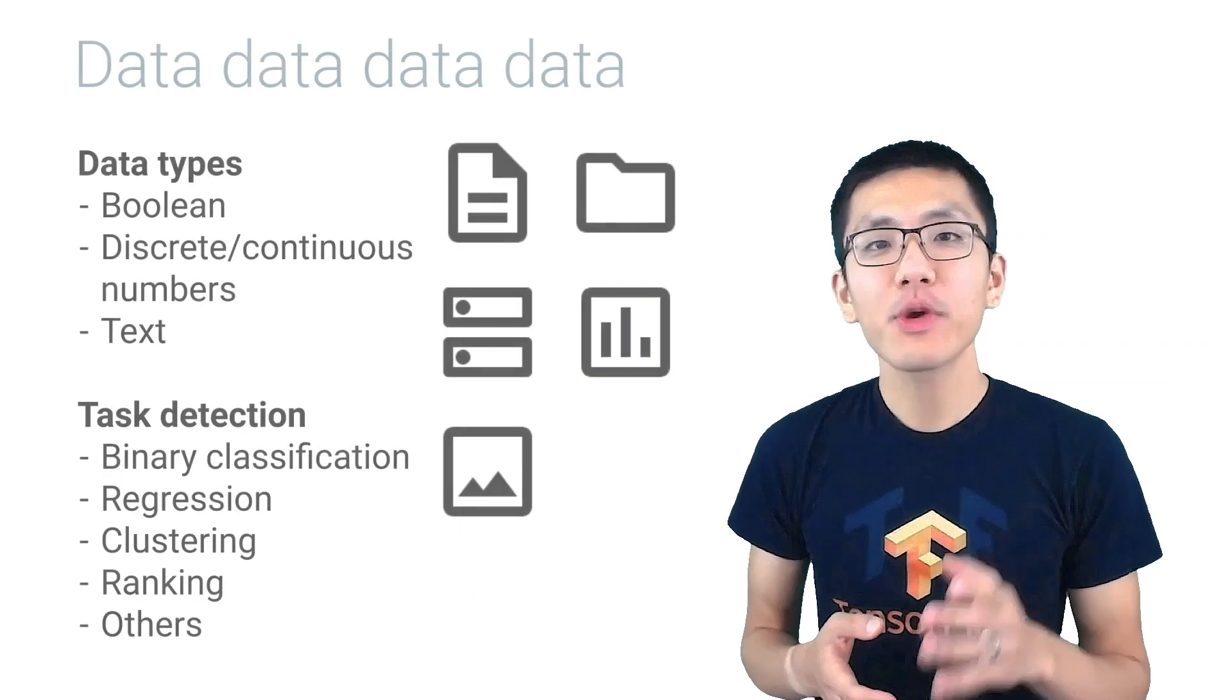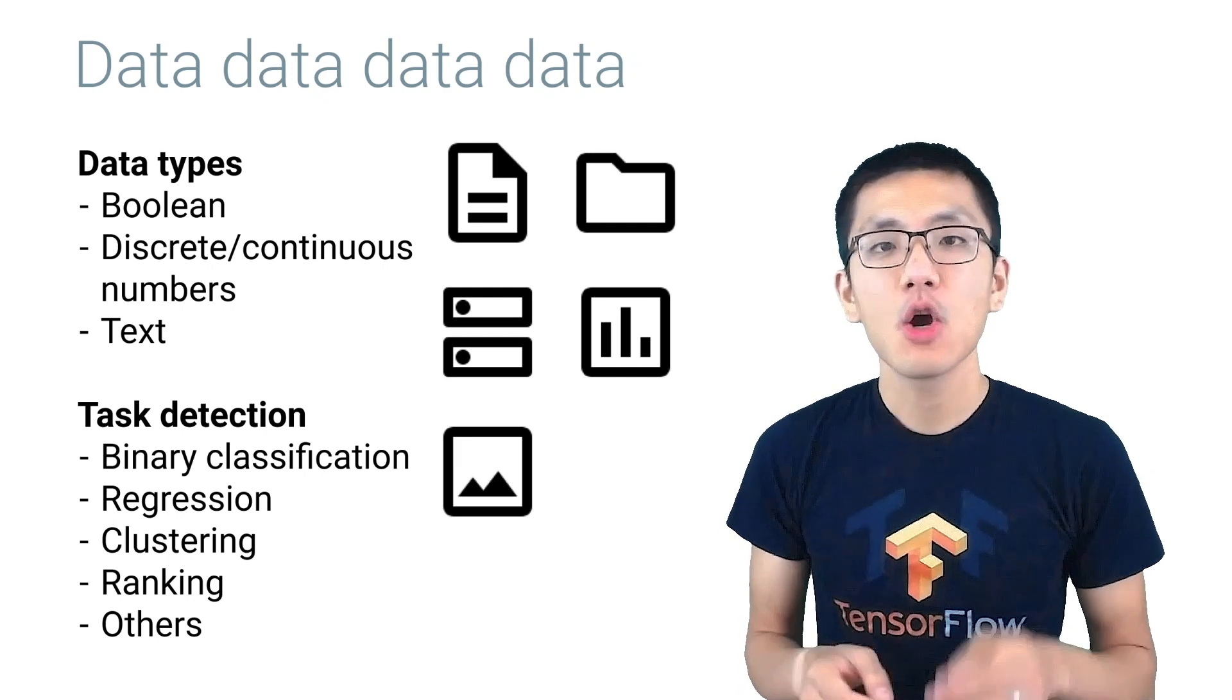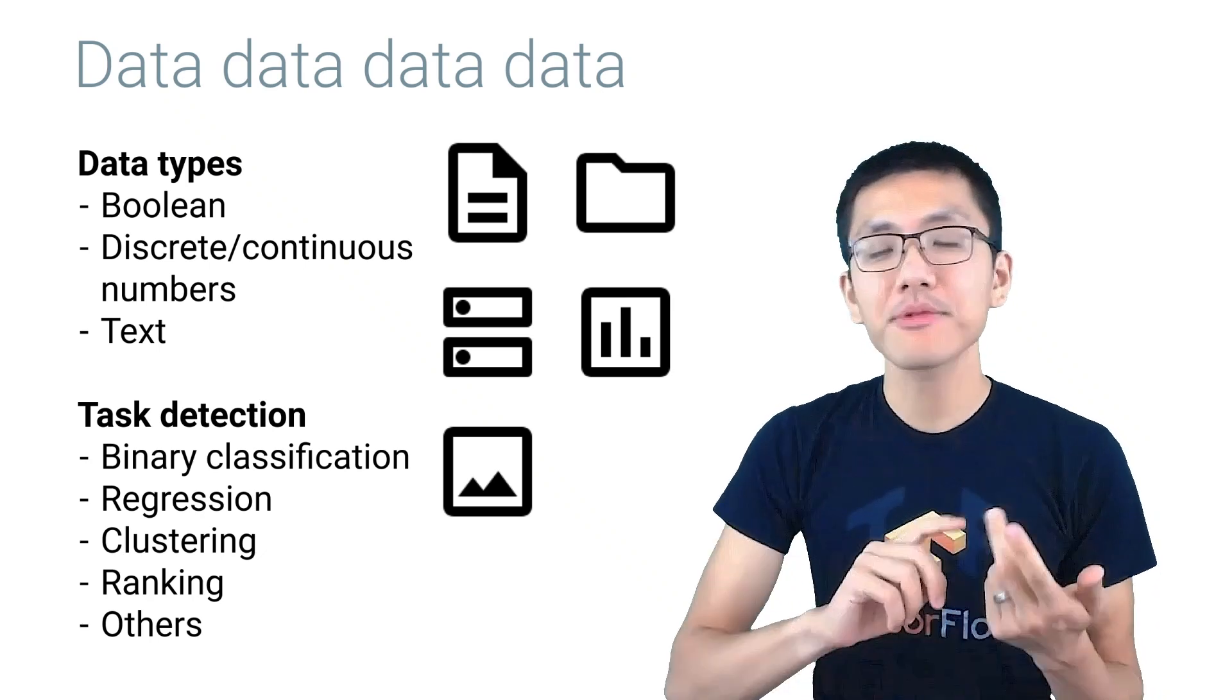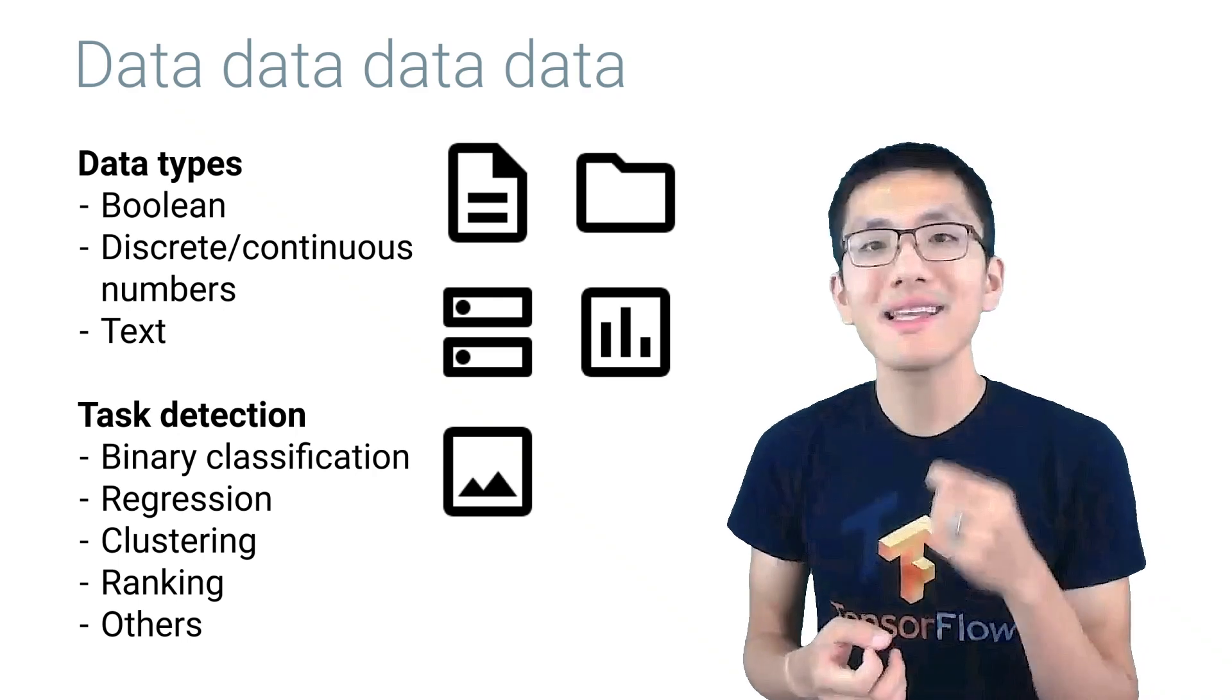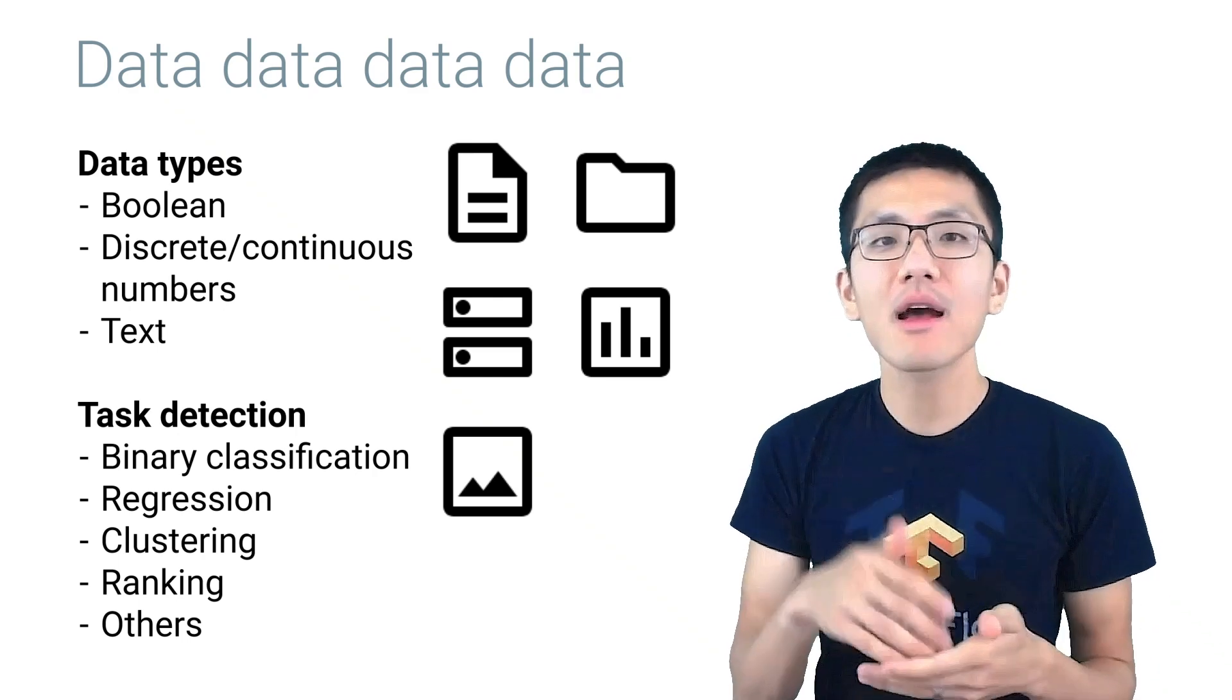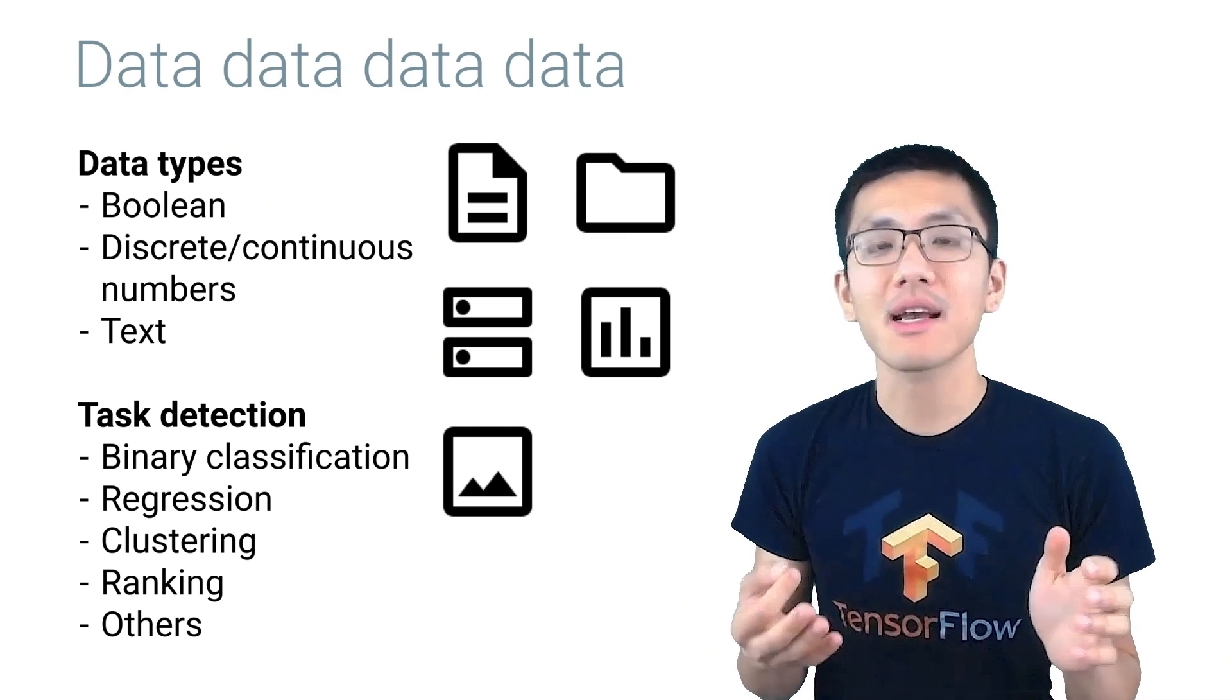When data first arrives, we can try to automatically detect the type of data in each column, whether it's boolean, discrete or continuous numbers, or perhaps just text. We could even go as far as to try to detect the intent of a column, perhaps identify the target column or figure out if a column should be numerical, categorical, or just free text.